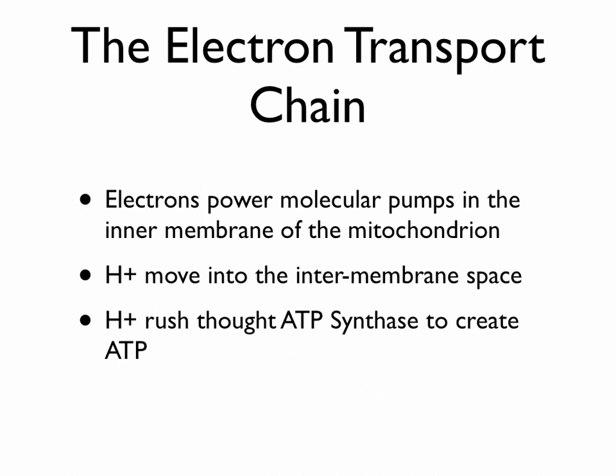When the electron transport chain goes to work, it basically allows the electrons from the Krebs cycle and glycolysis to power molecular pumps in the inner membrane of the mitochondrion. These molecular pumps move hydrogen ions into the intermembrane space. Eventually, the hydrogen ions rush through ATP synthase to create ATP.